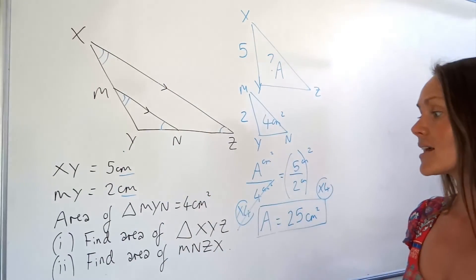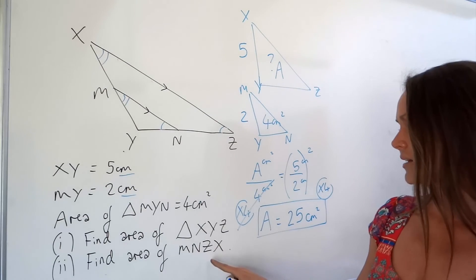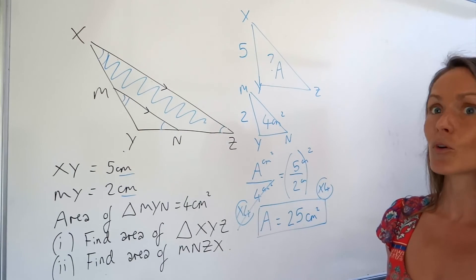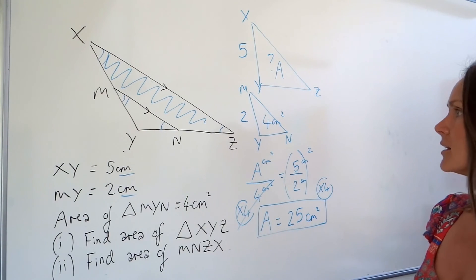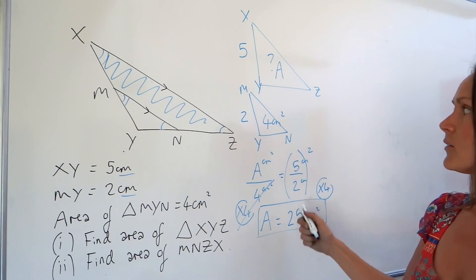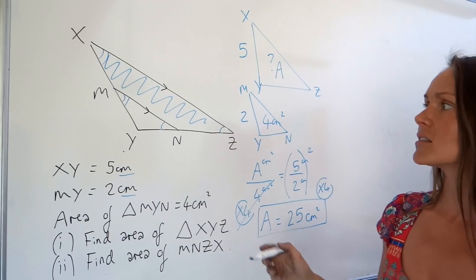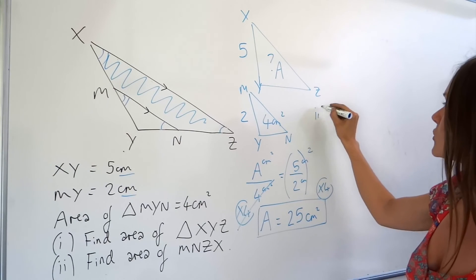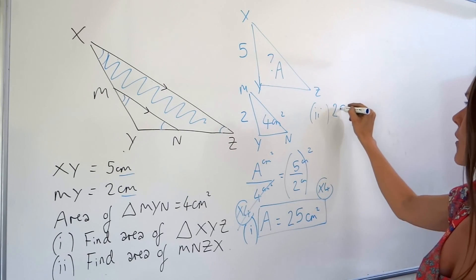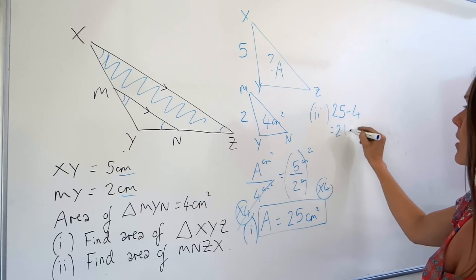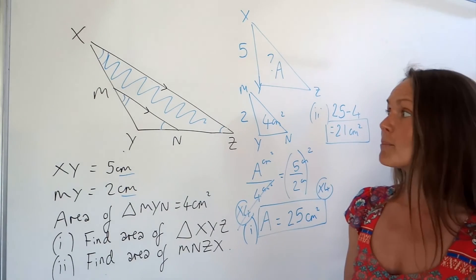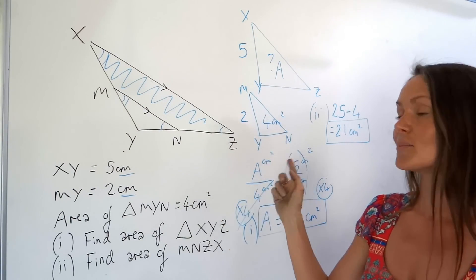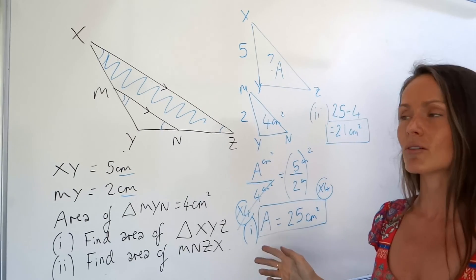The second part asks for the area of trapezium NNZX. I know the area of the large triangle is 25 cm² and the small triangle is 4 cm², so subtracting the small triangle from the large one gives the area of the trapezium. That's 25 minus 4, which is 21 centimeters squared. Remember: if you're given just one diagram like this, redraw the similar shapes separately because it makes it much easier to see what's going on.